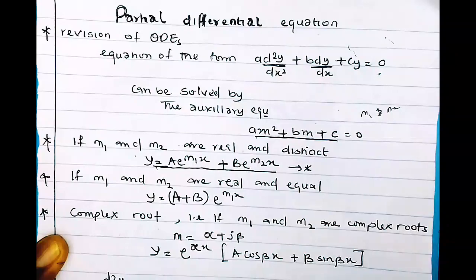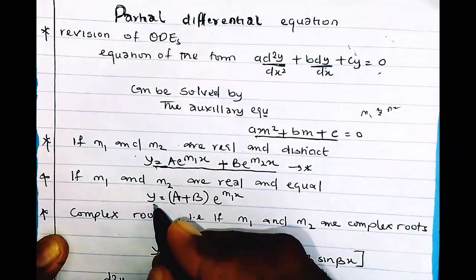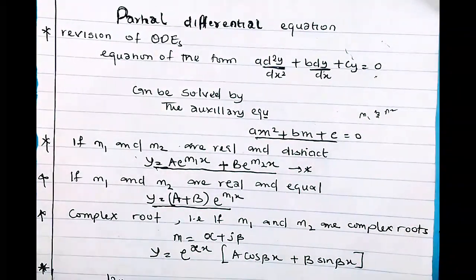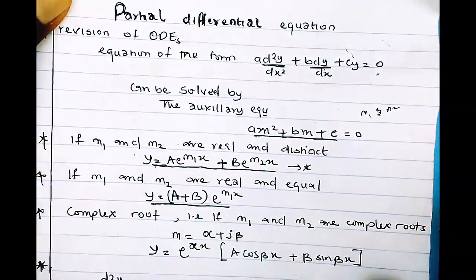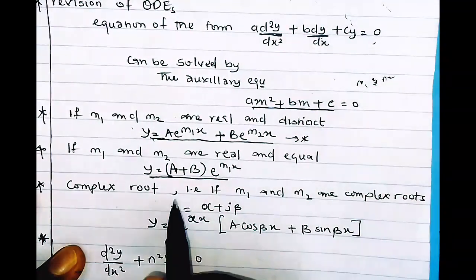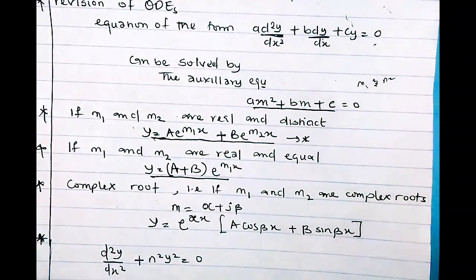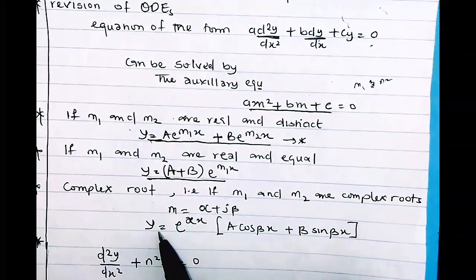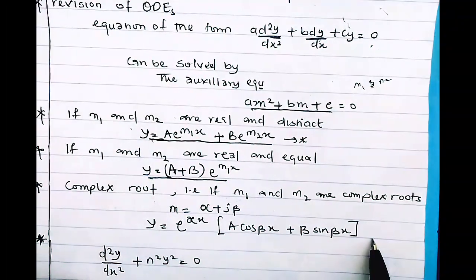If m1 and m2 are real and equal — for example m1 = 2 and m2 = 2 — the solution takes a different form. If m1 and m2 are complex roots of the form alpha plus or minus beta i, where alpha is the real part and beta is the imaginary part, then the solution is given by the standard complex-root formula.